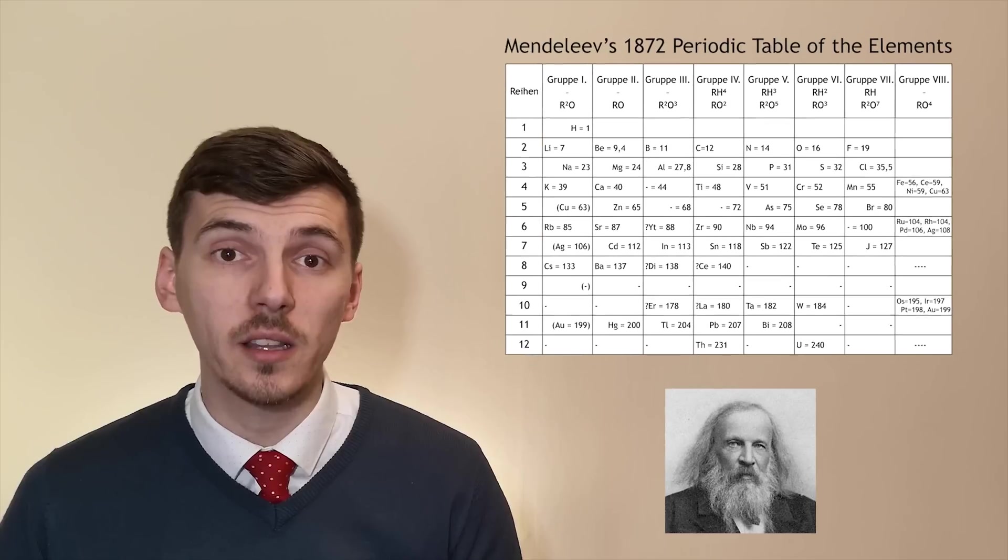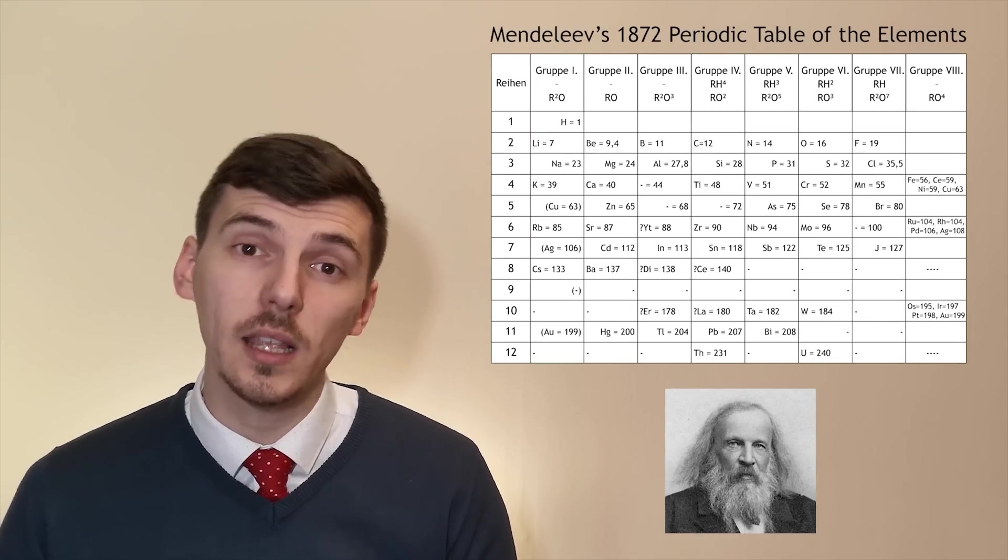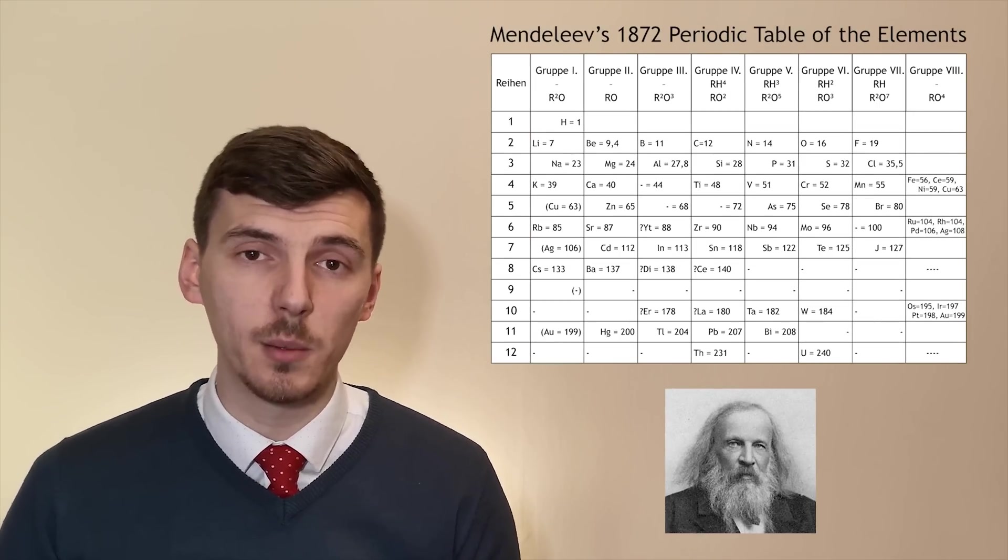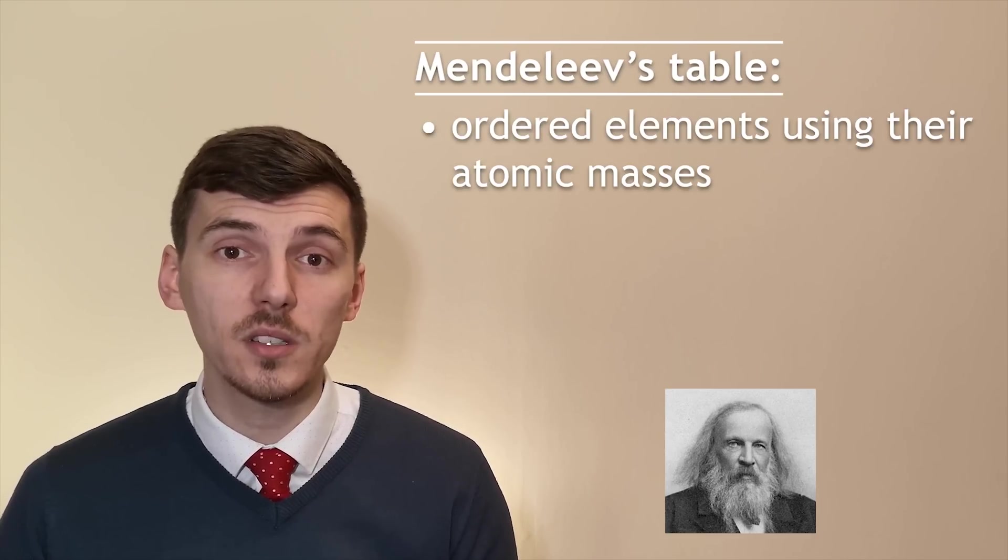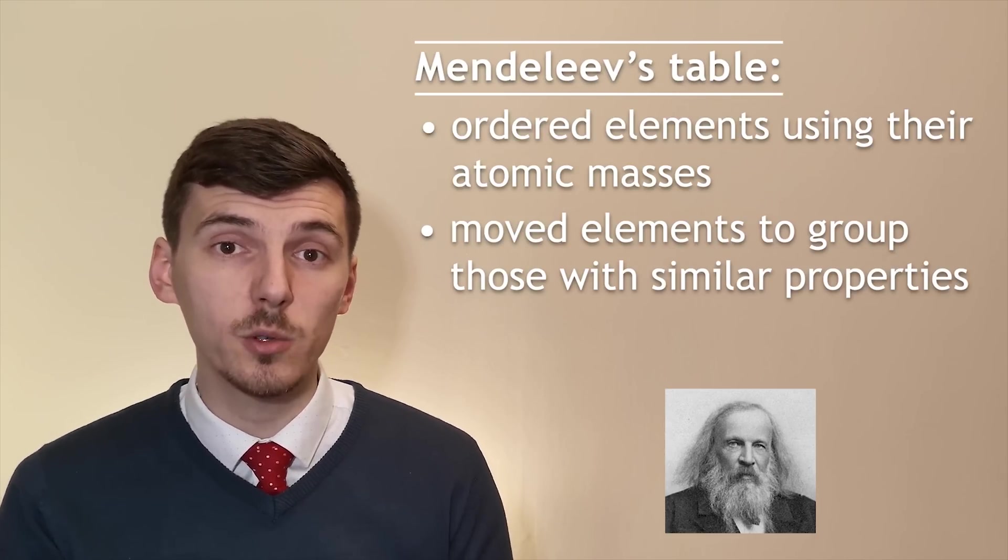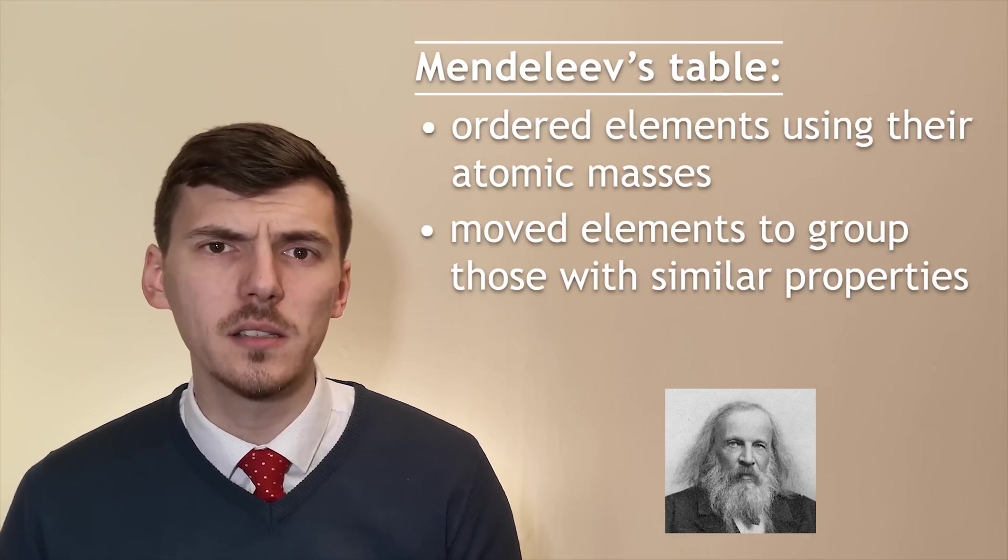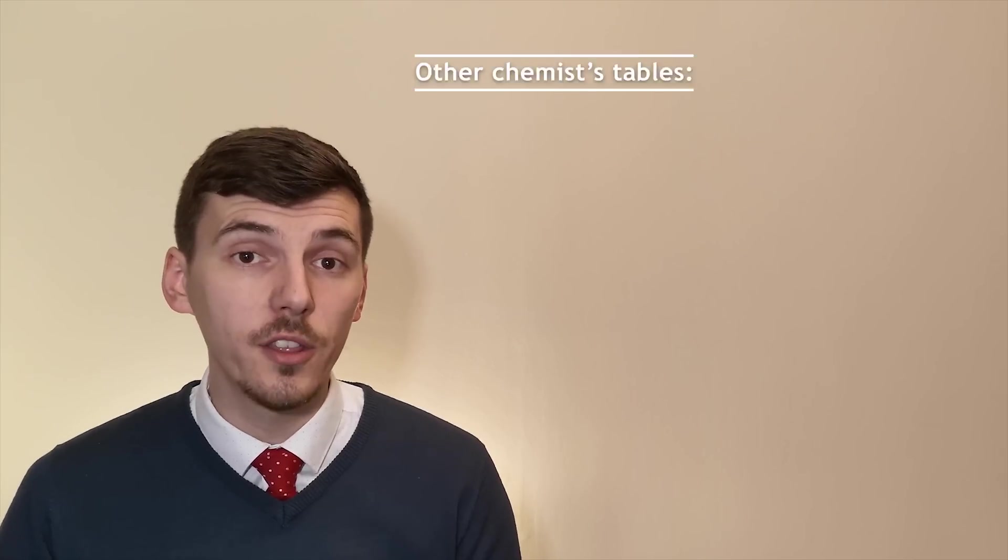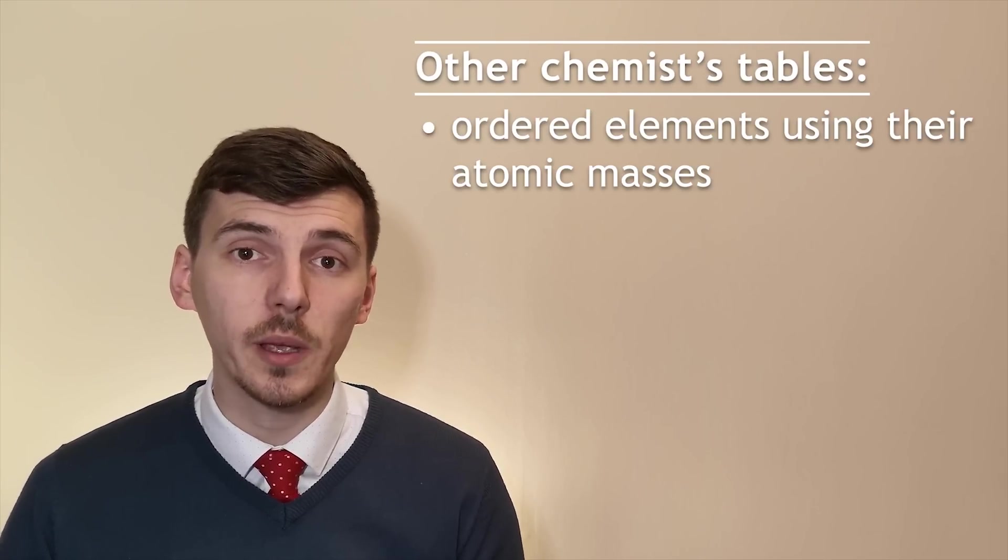Dmitry Mendeleev worked on a periodic table design that incorporated not only the atomic masses of the elements that had been discovered but he also used the idea that different elements had different properties and those properties could be seen almost as repeating patterns throughout the table. This put him ahead of his competitors such as John Newlands as they hadn't taken these ideas into account when making their tables. They had just ordered the elements by their atomic masses.